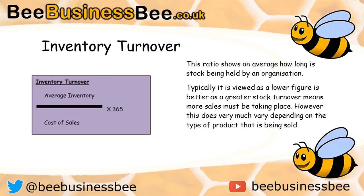The final ratio is inventory turnover. Inventory is a word for stock. This ratio calculates how much stock is being sold over a period of time — how quickly stock is being sold. A lower ratio is better. For example, an answer of seven means inventory is sold every seven days on average, whereas 14 means every 14 days, so clearly selling every seven days is preferable.